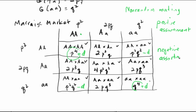You could also have negative assortment — opposites attracting — where D is negative. If you are big-A big-A, you're actually less likely than p raised to the fourth to choose a mate of the same type, and p-squared q-squared minus D, with D being negative, would cause a greater than p-squared q-squared likelihood of choosing a mate of the opposite type. For example, white-fur individuals selecting the darkest-fur mates they can find, and vice versa. Positive assortment is far more common in nature, but both forms can occur.